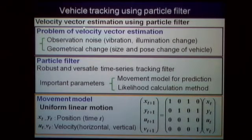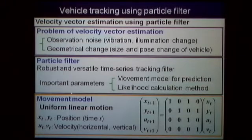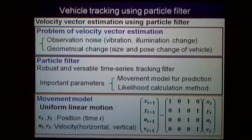I will explain velocity vector estimation using the particle filter. The problem of velocity estimation involves two observation noise sources: vibration, illumination change, and geometrical change such as size and pose change of the vehicle. The particle filter is a robust and versatile time-series tracking filter. As a movement model, we use a simple uniform linear motion, since the time between frames is short. The state variables X_t and Y_t represent position, and U_t, V_t represent velocity, with transitions given by simple equations.